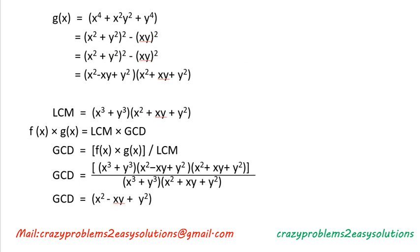g(x) = x⁴ + x²y² + y⁴. We simplify this as (x² + y²)² − (xy)², which is in the form a² − b². Using the identity a² − b² = (a + b)(a − b), with a = x² + y² and b = xy, we get (x² − xy + y²)(x² + xy + y²).